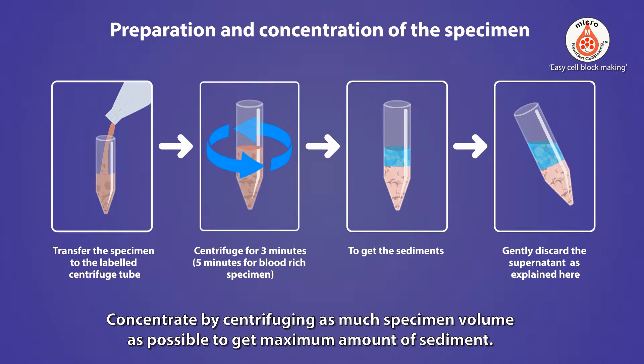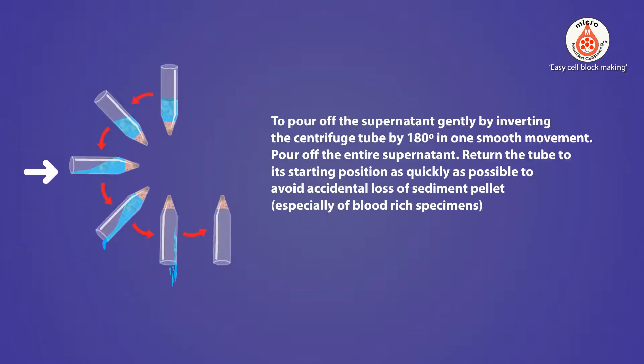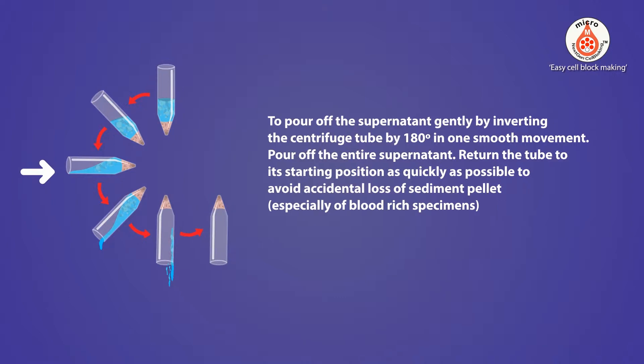Concentrate by centrifuging as much specimen volume as possible to get the maximum amount of sediment. Pour off the supernatant gently by inverting the centrifuge tube 180 degrees in one smooth movement, pouring off the entire supernatant. Return the tube to its starting position as quickly as possible to avoid accidental loss of sediment pellet, especially with blood-rich specimens.